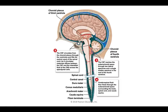Here we can see the choroid plexus with the ependymal cells. One choroid plexus invaginates into the lateral ventricle, and another is in the fourth ventricle folding into the space between the pons and the cerebellum. Cerebrospinal fluid is produced in these two areas, filling the third and lateral ventricles and moving down through the interventricular foramen and into the fourth ventricle.